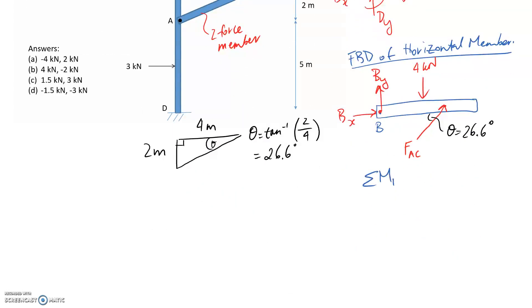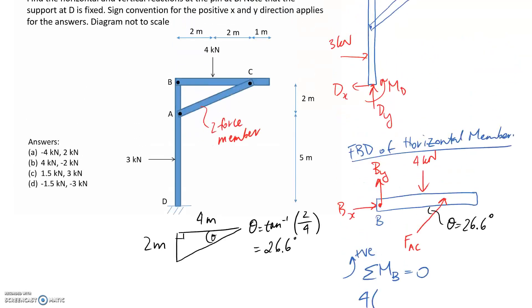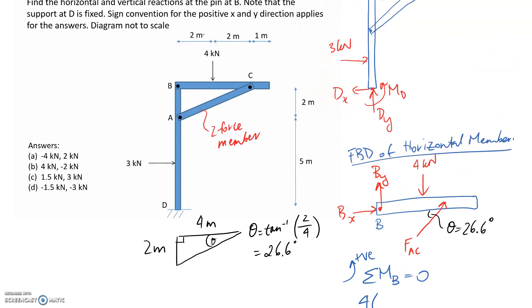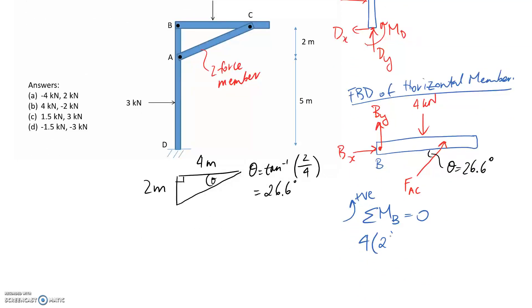Summing moments about point B equals zero. These two are out. The next one is the 4 kilonewton force, and we need the distance to its line of action, which is 2 meters. This is going to try and push us clockwise, so it's negative. Now considering the force FAC, I'm going to split it up into horizontal and vertical components.